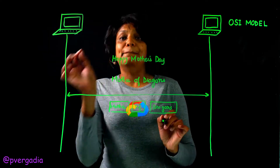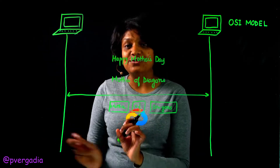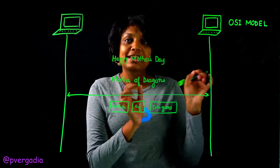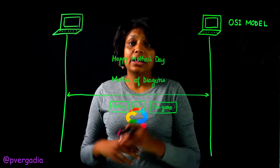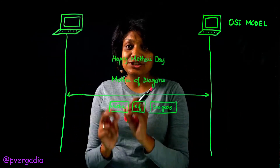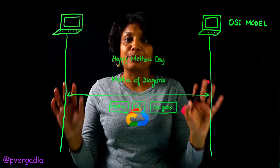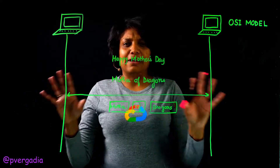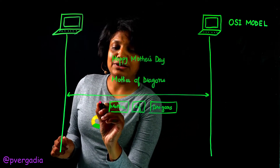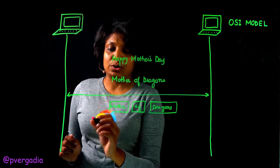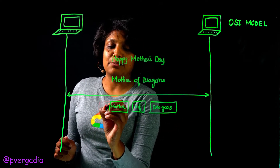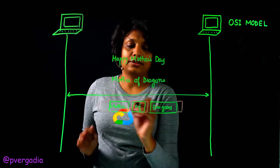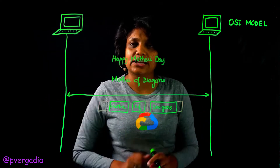The shipping company adds a building number to each box to identify the right building when it reaches my mom, even if the boxes arrive separately. The packaging company makes sure that building number is added to each of these packages.